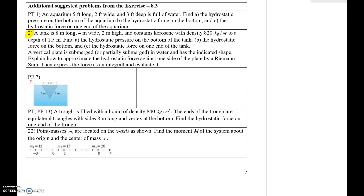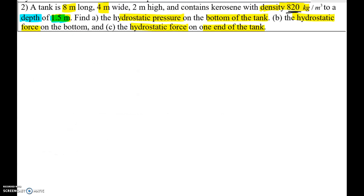In this video I will be showing you problem number 2 of chapter 8 section 3, which are from additional suggested problems in your handout. A tank is 8 meters long, 4 meters wide and 2 meters high, and contains kerosene with density 820 kilograms per meter cube to a depth of 1.5 meters. Find: (a) the hydrostatic pressure on the bottom of the tank, (b) the hydrostatic force on the bottom, and (c) the hydrostatic force on one end of the tank.